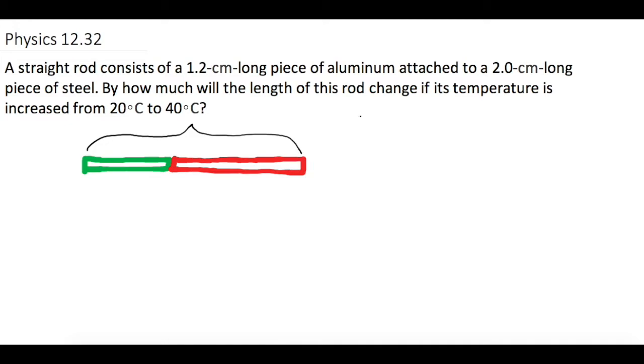So the equation for linear expansion is the change in length equals the coefficient of linear expansion, which we use alpha to symbolize, times its initial length times the change in temperature.